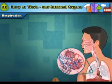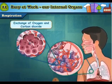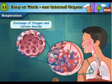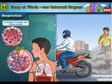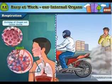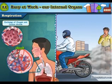During exhalation, carbon dioxide is given out from the body. In this way, the exchange of oxygen and carbon dioxide takes place in the alveoli. The air in the atmosphere may contain dust and smoke particles, and may even contain disease-producing microorganisms, which are harmful for the body.